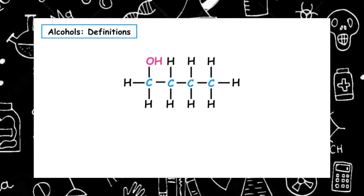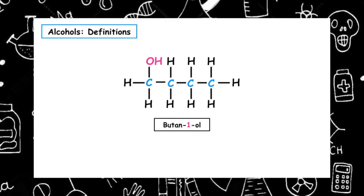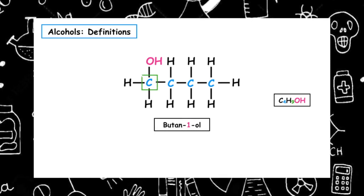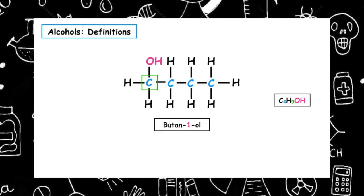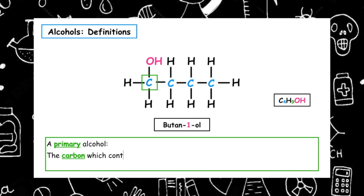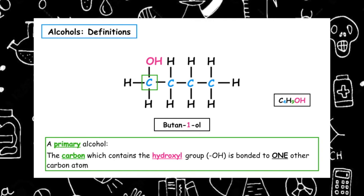This first alcohol we have is butan-1-ol. It has the molecular formula C4H9OH. What we're interested in is the carbon which contains the functional group, which is known as the hydroxyl group. The definition of a primary alcohol is that the carbon which contains the hydroxyl group is bonded to one other carbon atom.